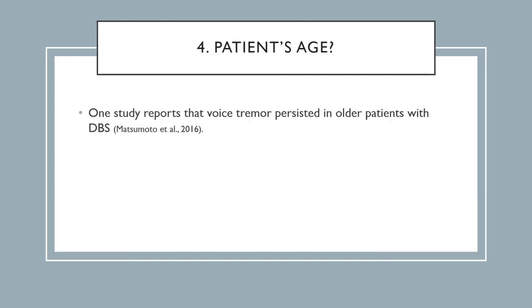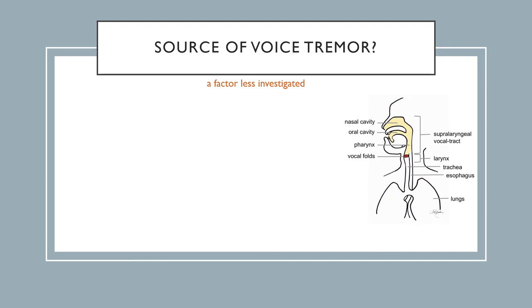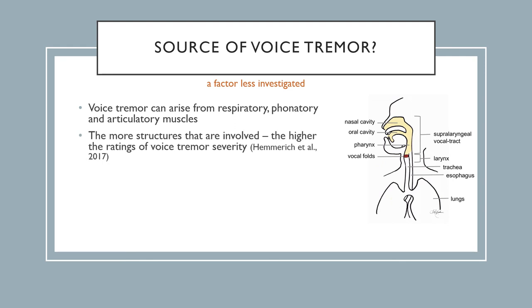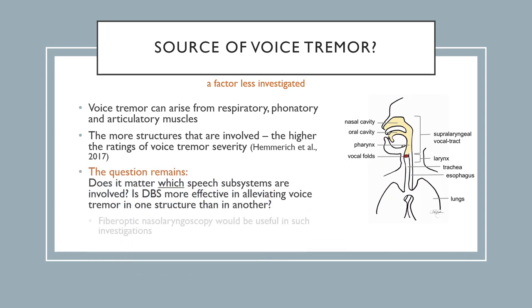It has been suggested that patients' age could affect the outcome and that voice tremor is more likely to persist in older patients, though more studies are needed. One aspect that has not yet received attention is whether DBS outcomes could be dependent upon where voice tremor resides. Voice tremor can arise from respiratory, phonatory, and articulatory muscles, and the more structures that are involved, the more severe the voice tremor. The question remains: does it matter which speech subsystems are involved and how many? To investigate such questions, one would need to examine patients more closely using, for example, fibro-optic nasal laryngoscopy.